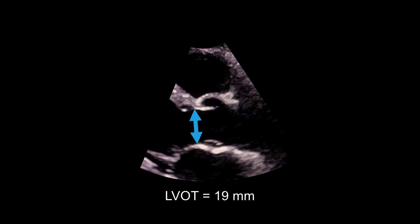Caliper measurements can then be applied to measure from the inner edge to the inner edge of the outflow tract in mid-systole. Ideally, three or more beats should be measured for patients in sinus rhythm, with more used for those in an irregular rhythm. In this example, the LVOT measures 19 mm.